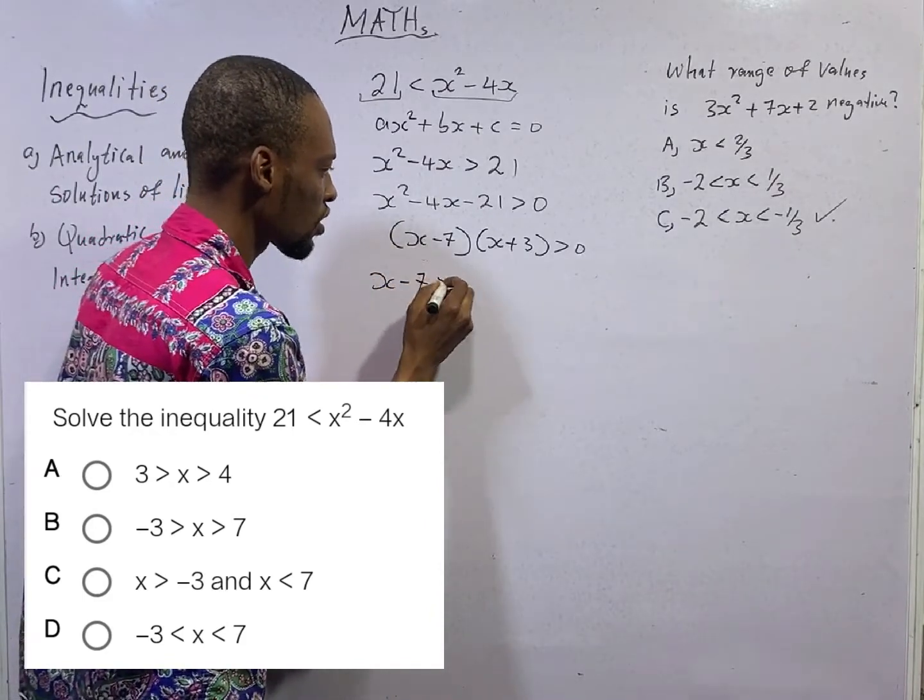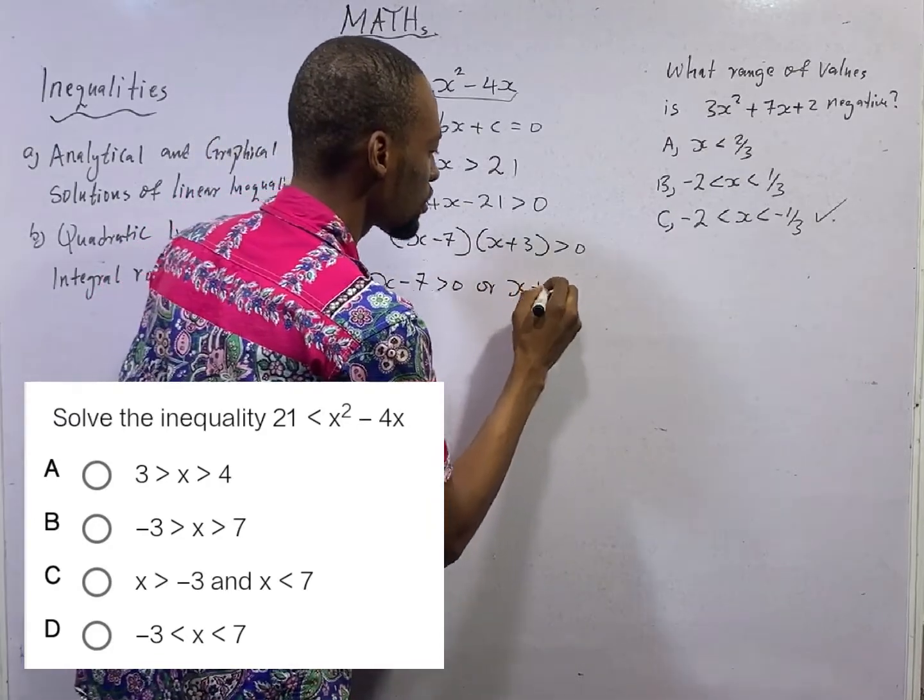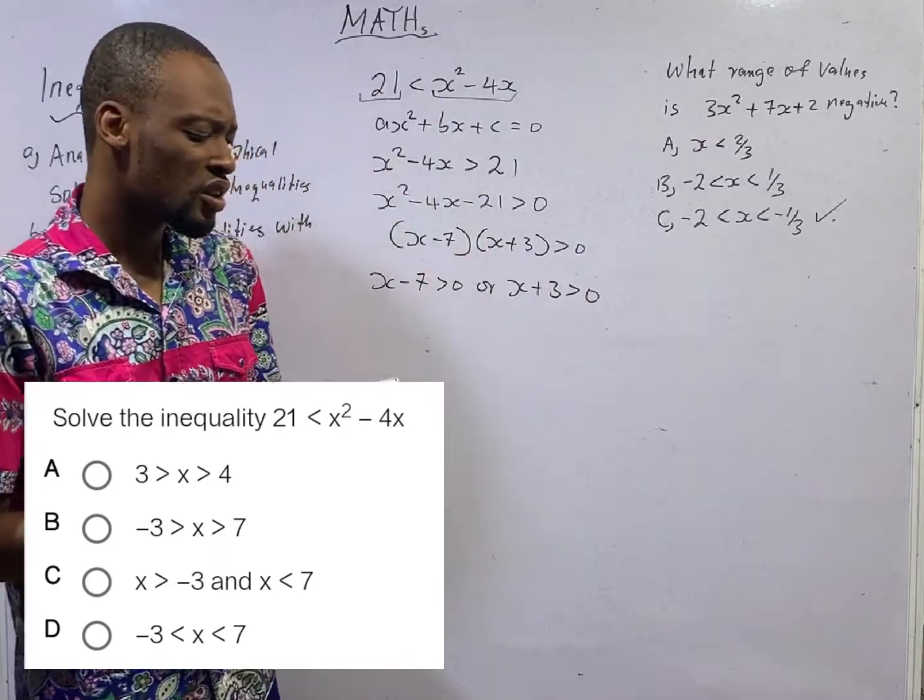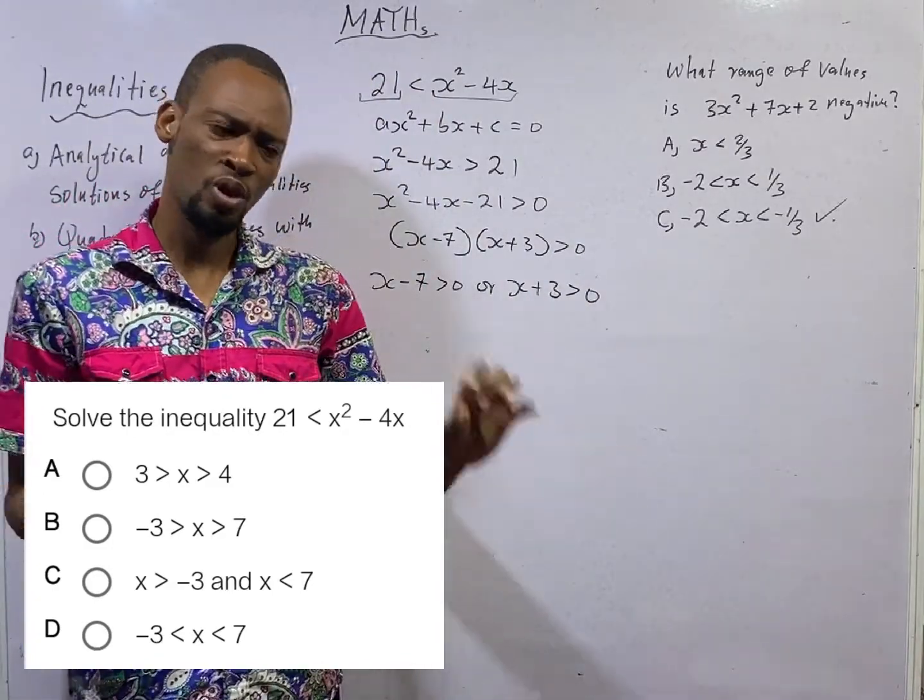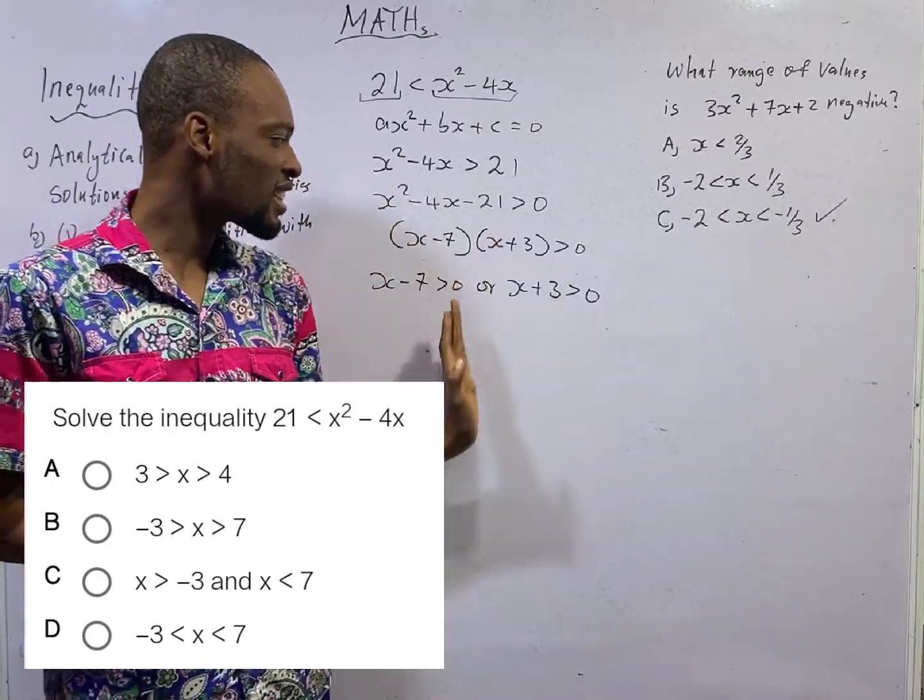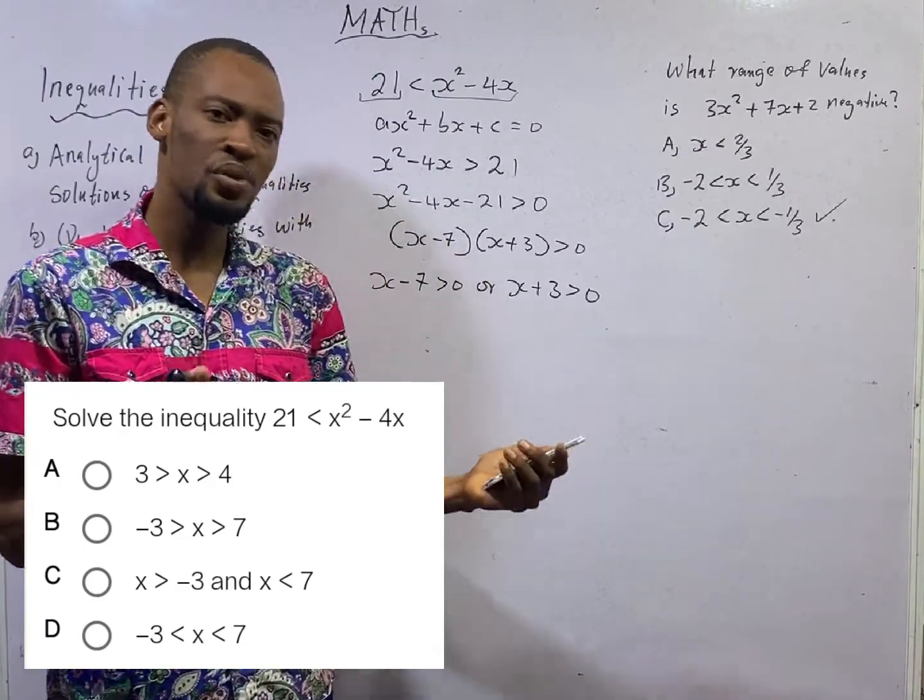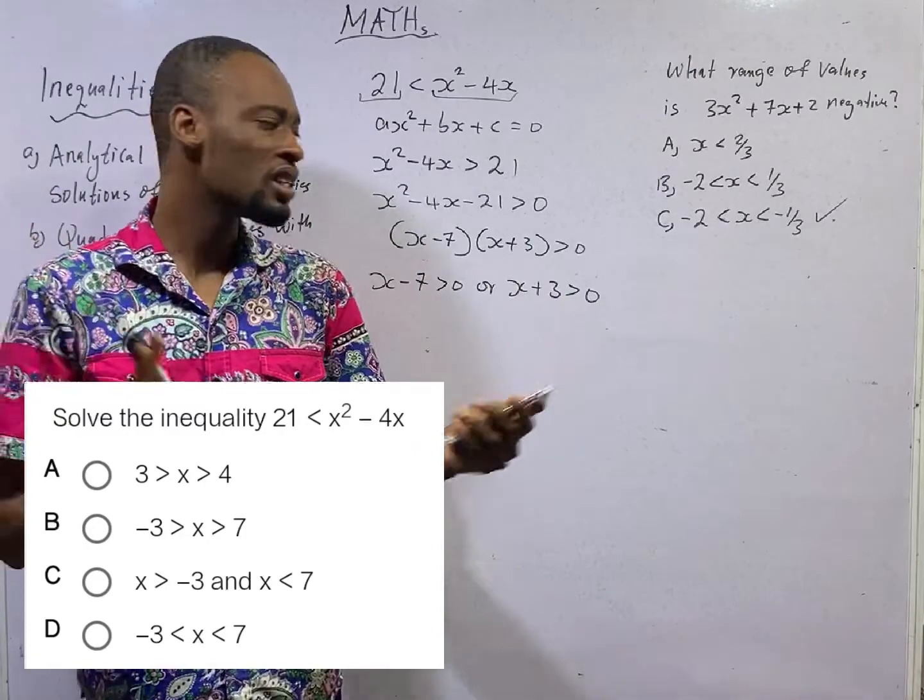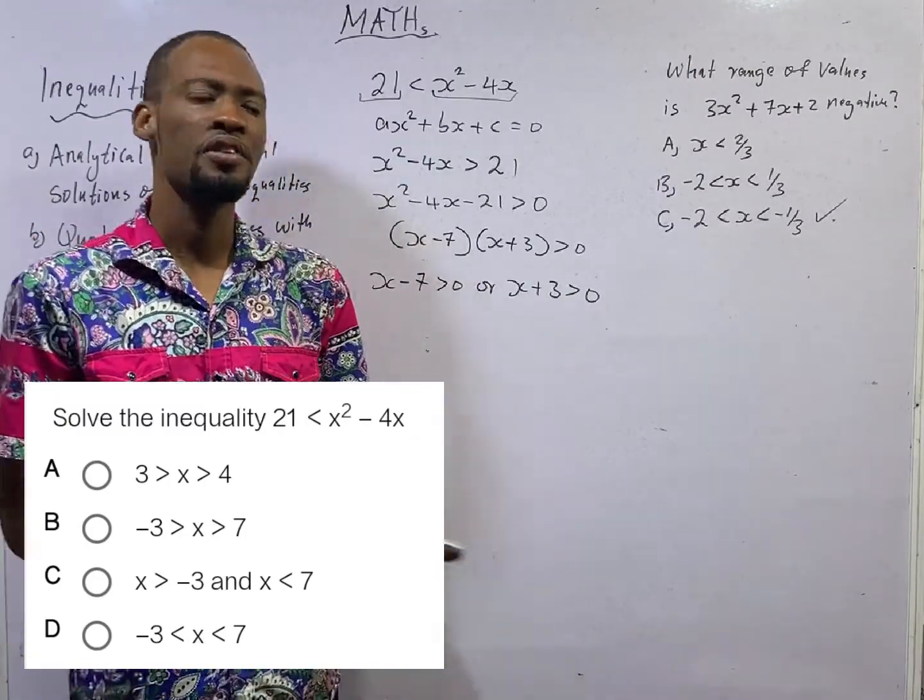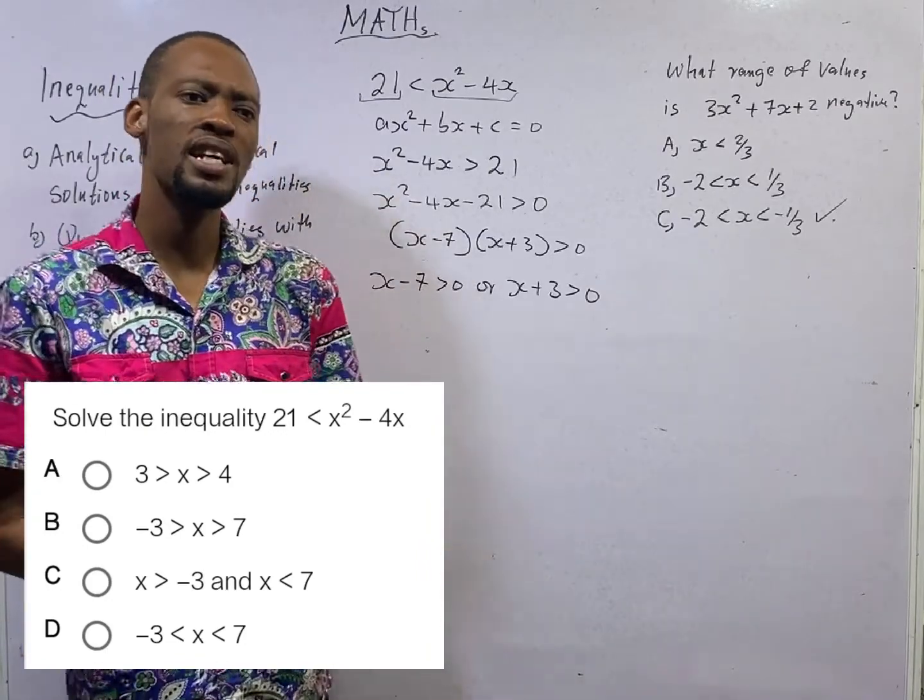You do something like this. S minus 7 is greater than 0 or s plus 3 is greater than 0. When it comes to quadratic inequality, this is a basic rule. Any side that gives you a negative number invert the sign. And any part that gives you a positive number, the sign remains exactly the way it is supposed to be. This is a generalization. From all the questions I've seen, this rule works. So take it that way.